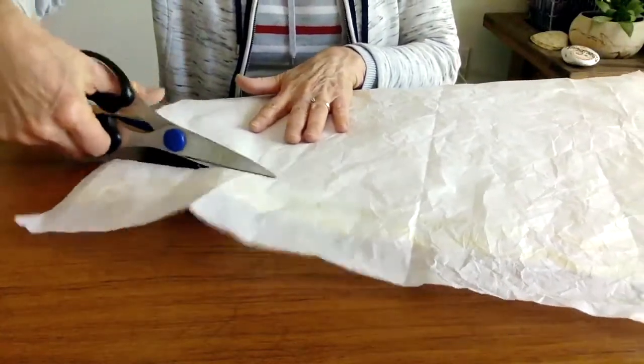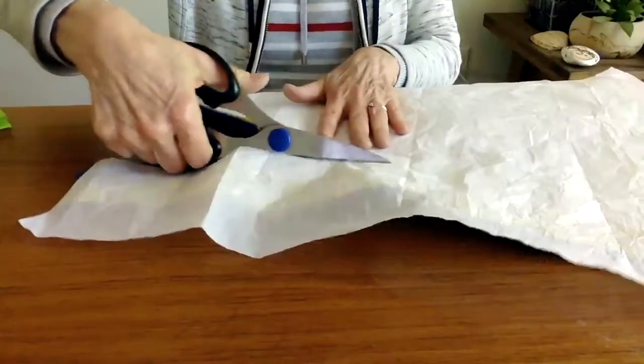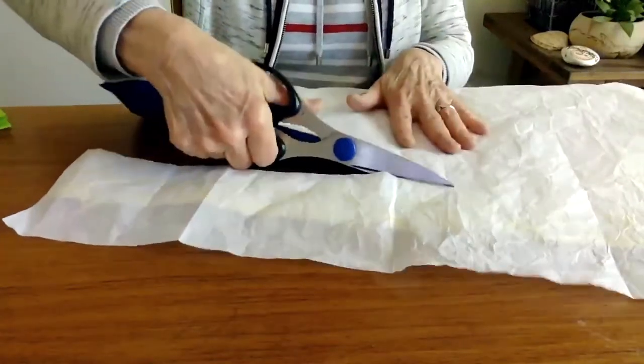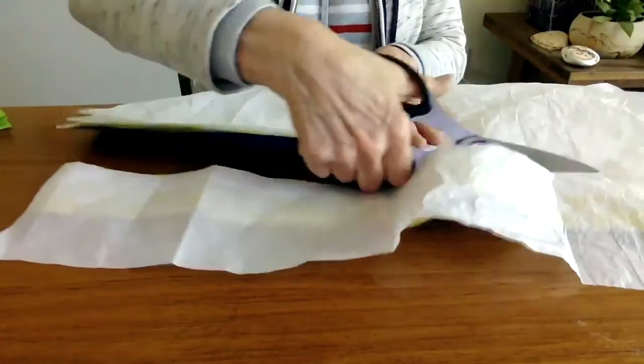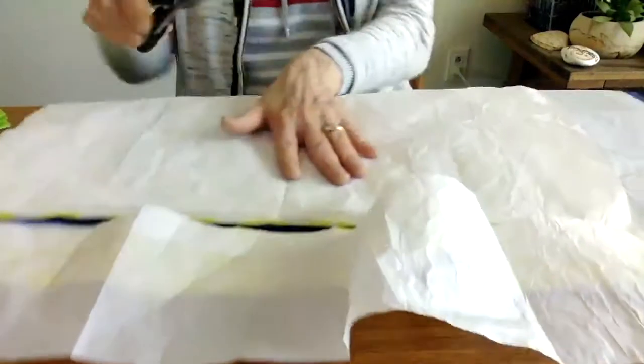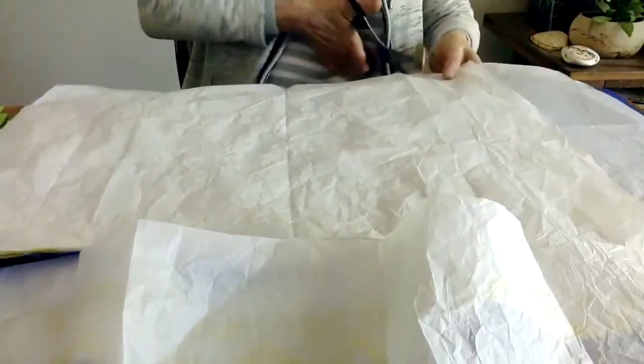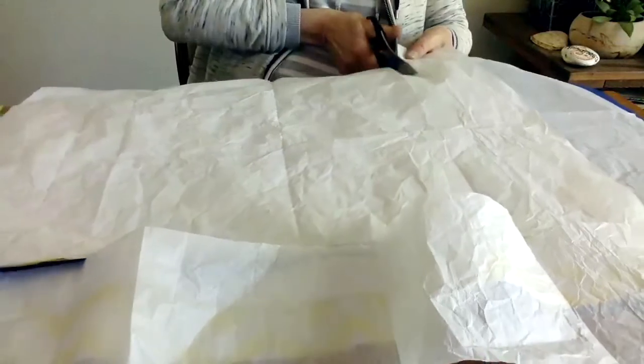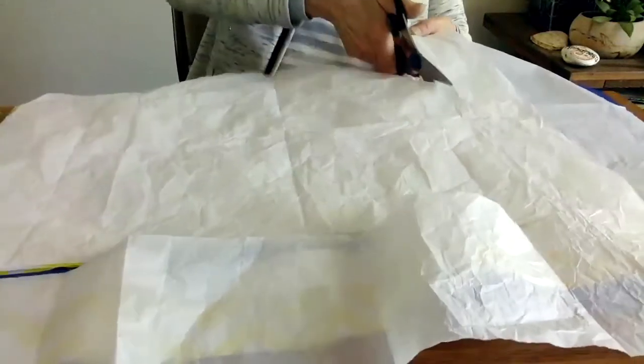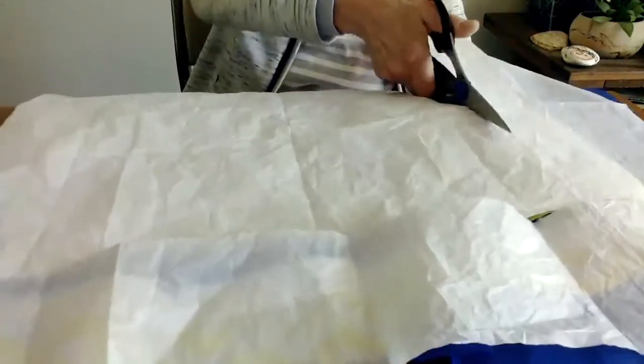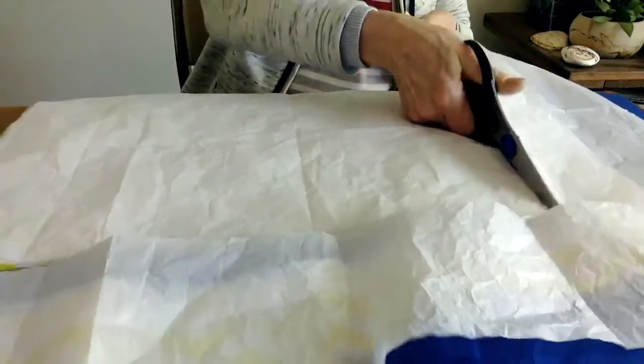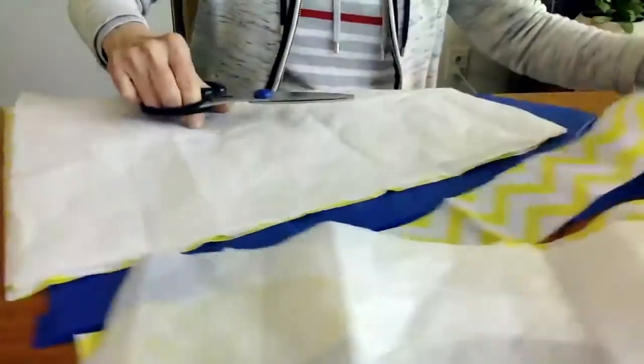Also, my tissue paper was different sizes. So if I cut while they're all laying on top of each other, I can make them the same size before I start folding. So I'm cutting away extra tissue paper and making all my tissue paper the same size.